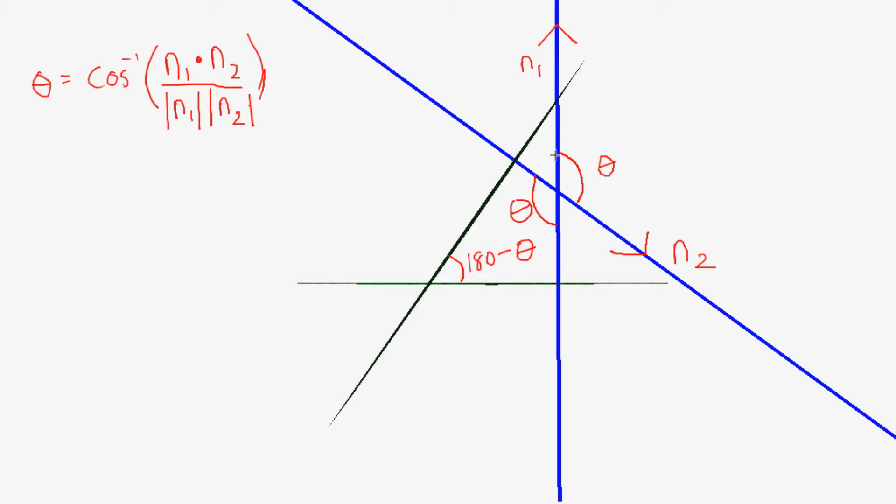Now, there are a couple situations. This is an obtuse angle, this is an acute angle. Just to guarantee that we're always going to be getting an acute angle, what we can do here is to take the absolute value of the numerator here. Because this could be negative, and we just want to make it positive.